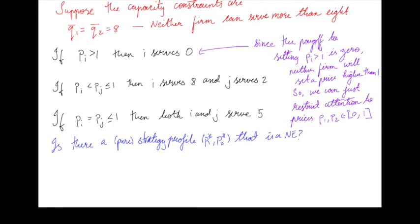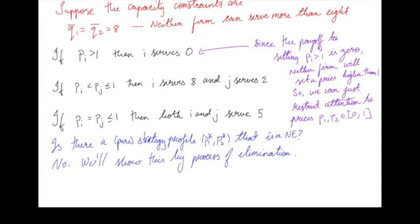Can we find a P1* and P2* that form a Nash equilibrium, so that the best response of firm 1 when firm 2 sets price P2* is to set price P1*, and vice versa? It turns out there is no such pure strategy Nash equilibrium. We'll show that first by process of elimination, looking at various configurations of P1* and P2*, and show that none of them could be a Nash equilibrium.